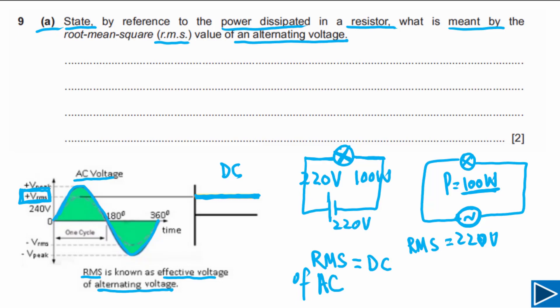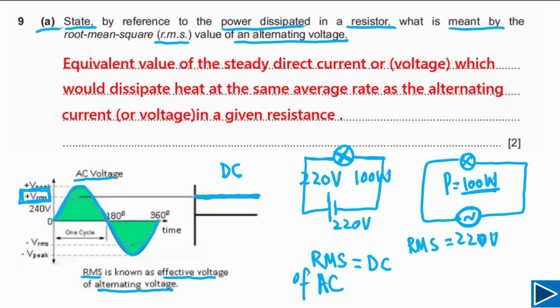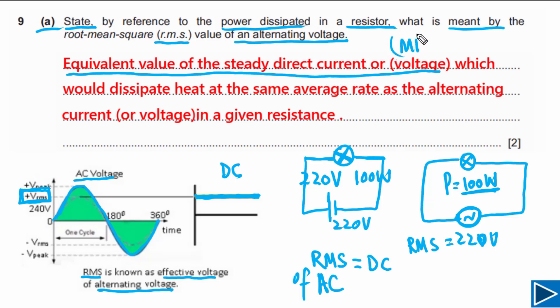Now let me explain how to write a proper answer. If you have written about the equivalent value of steady DC current, you will get one mark — that is the M mark, meaning it must be in your answer. If you also mention the second part referencing power dissipation, you will get a second mark, which is the A mark.